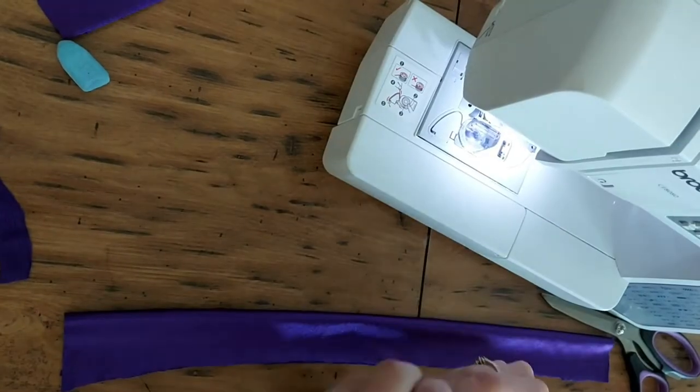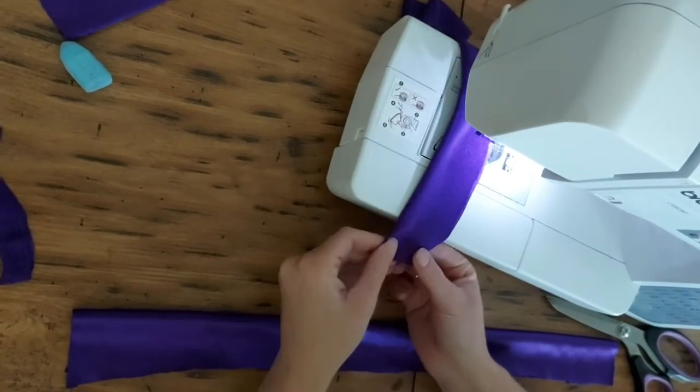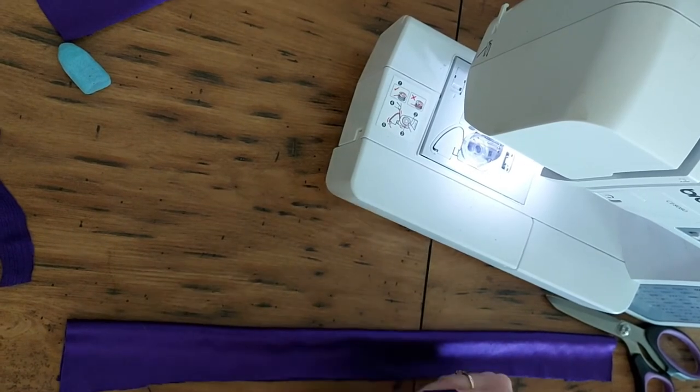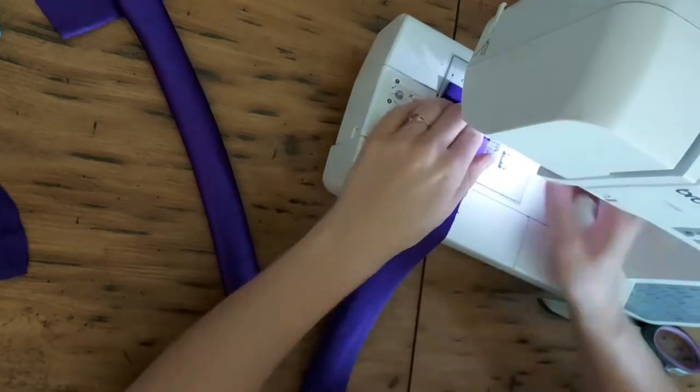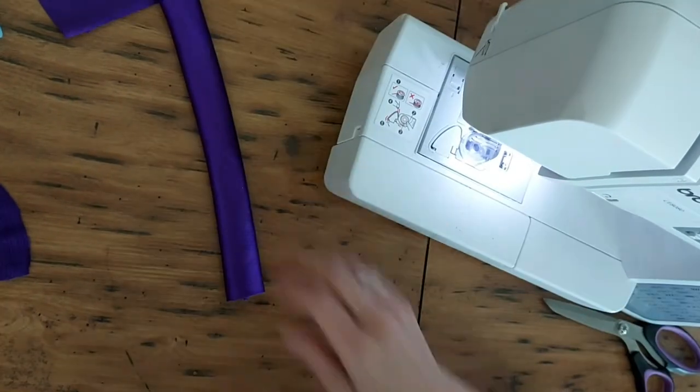Now again, right sides together, you are going to sew along the one line to create a long tube of fabric. Once sewn, you can flip it right side out and then sew the top edge closed. I still did leave one side open because that part is going to be sewn to the dress anyway.